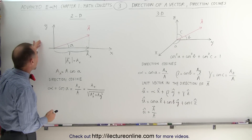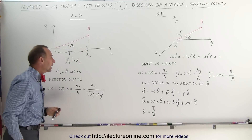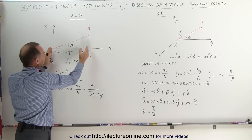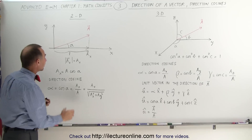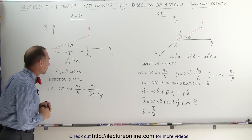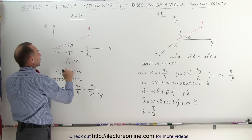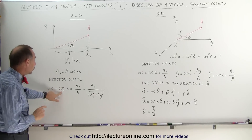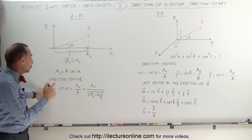Let's take a simple example in the xy-plane. Here's the vector A. Let's say that there's an angle between the vector A and the x-axis — let's call it angle A. When we project the vector A onto the x-axis, this becomes the length of that projection, which is the x-component of vector A. The magnitude of that x-component equals the magnitude of the vector times the cosine of the angle. The direction cosine is then defined as the cosine of that angle, which is a means of determining the direction of the vector relative to the x-axis.